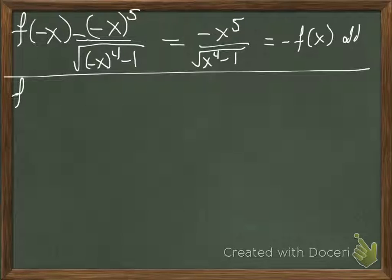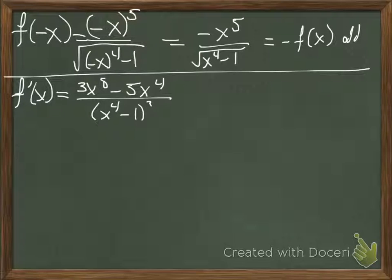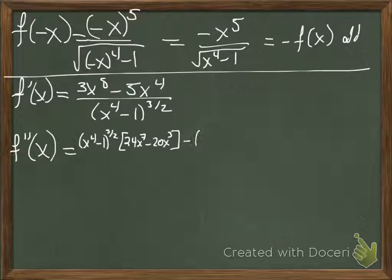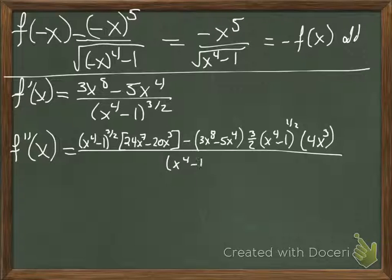Now we move to the second derivative, which just gets much more fun because we use the quotient rule again with a more complicated numerator — it's a mess. For the second derivative, using low d-high minus high d-low: low is x to the fourth minus one to the three-halves; d-high is 24x to the seventh minus 20x cubed; minus the high function 3x to the eighth minus 5x to the fourth, times d-low, which is three-halves times x to the fourth minus one to the one-half times 4x cubed by the chain rule; all over the low squared, which is x to the fourth minus one to the third power.